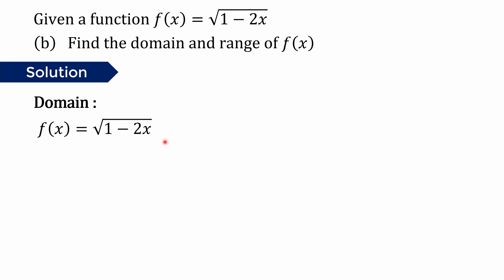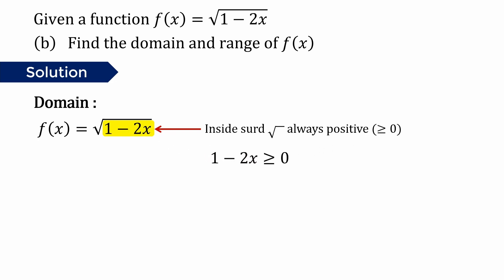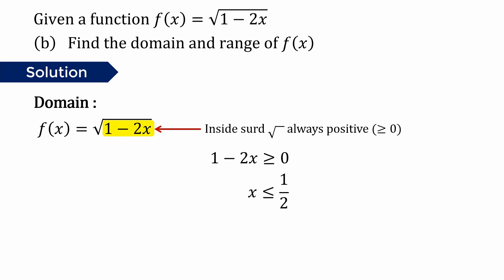For the domain, we determine it from the function 1 minus 2x. We know that for a square root, the inside function must always be non-negative. So 1 minus 2x is greater than or equal to 0. Simplifying: 1 is greater than or equal to 2x, or equivalently 2x is less than or equal to 1. Dividing both sides by 2, we get x is less than or equal to 1/2.